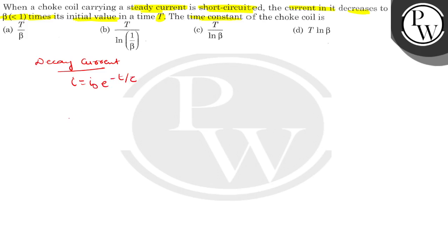And the current is, it says, beta times its initial value. So i, which is beta times its initial value, decreases to beta into i0.